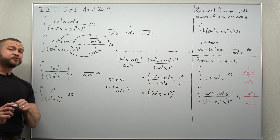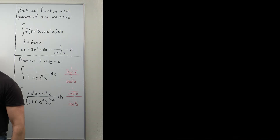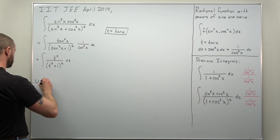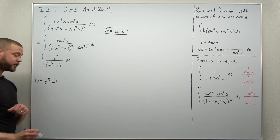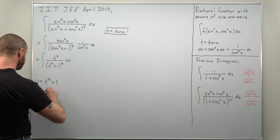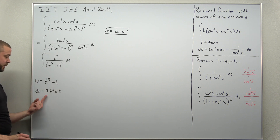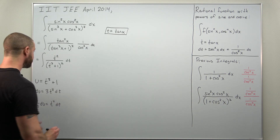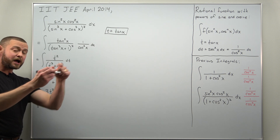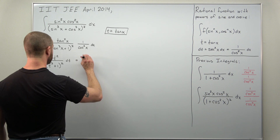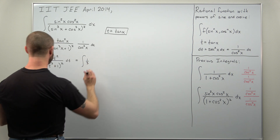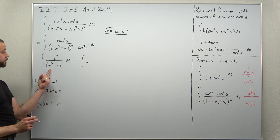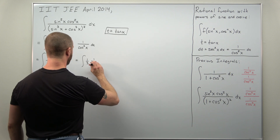At this point we have a straightforward integral that we can solve with a substitution. Let's use u equals t cubed plus one. Calculating the differential: du equals 3t² dt. We have a factor of t² dt, so dividing by 3 gives (1/3)du equals t² dt. We can now rewrite the integral in terms of u as (1/3) times (1/u²) du.